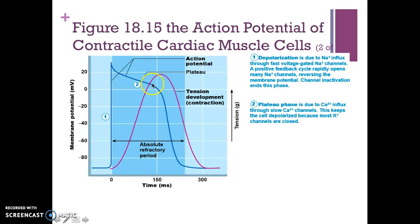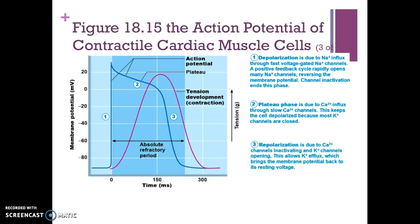The second part is the plateau phase, caused by calcium ion influx through slow calcium channels. This keeps the cell depolarized because most sodium channels are closed, so instead of falling immediately we have a plateau. Repolarization is the third phase — it's due to the calcium channels inactivating and potassium channels opening, allowing potassium efflux which brings the membrane potential back down to its resting voltage.